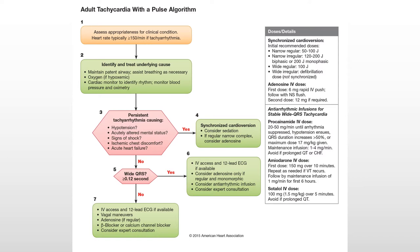Here's where we ask ourselves some questions. Is this tachyarrhythmia causing symptoms? Do we have hypotension, a change in mental status, signs of shock, chest pain, or acute heart failure — something like crackles in the lungs? If this is getting really bad really quickly, we need to intervene now. If you answer those questions yes, then the first step may be synchronized cardioversion.